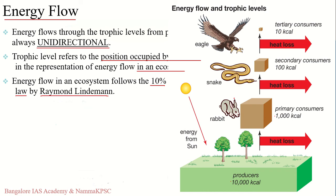The rabbit uses a lot of those 1,000 calories for respiration, metabolism, and reproduction, so by the time the next trophic level — a snake — feeds, only about 100 calories remain. The snake again uses energy for its own survival, so by the time an eagle feeds on the snake, only 10 kilocalories are available. This is the 10% loss as we move from one trophic level to another.